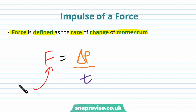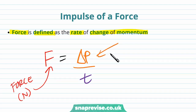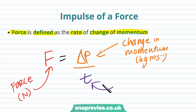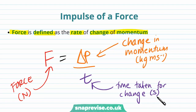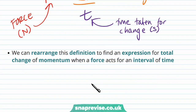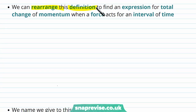The force here is in newtons, our change in momentum is in kilograms meters per second, and the time taken for the change is in seconds. We can rearrange this definition to find an expression for the total change of momentum when a force acts for an interval of time.